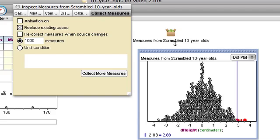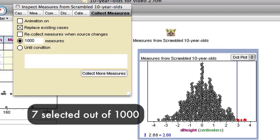I'm going to go ahead and select a bunch of them. Put my cursor over the collection. And it says 7 out of 1,000 cases were at least as extreme as my test statistic.